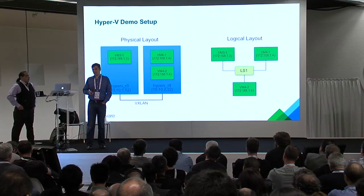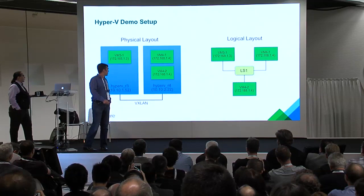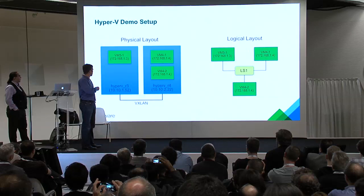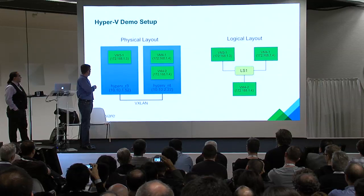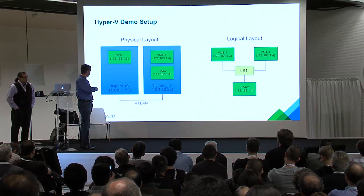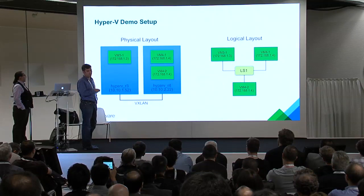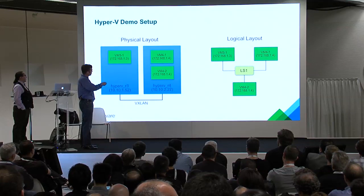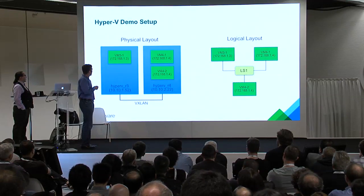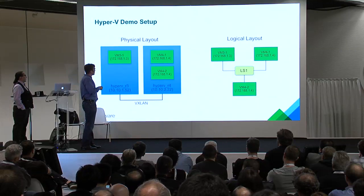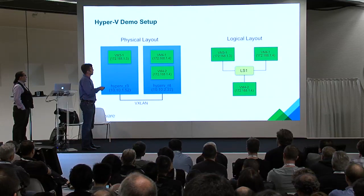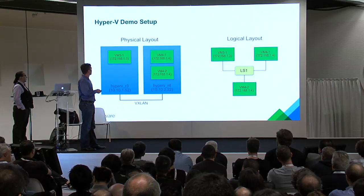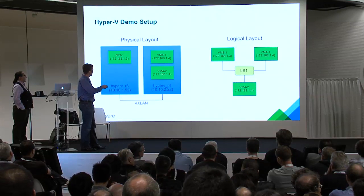I have a demo of using NSX and Hyper-V together. In this demo, there are two Hyper-V hypervisors — Hyper-V R3 and Hyper-V R4 — shown in blue on the bottom left. These have 10-dot addresses and are connected together with a VXLAN tunnel. There are three VMs — one on R3 and two on R4 — with addresses in the 172 address space. This is the physical layout. But logically in NSX, these VMs were configured to be on the same logical switch.